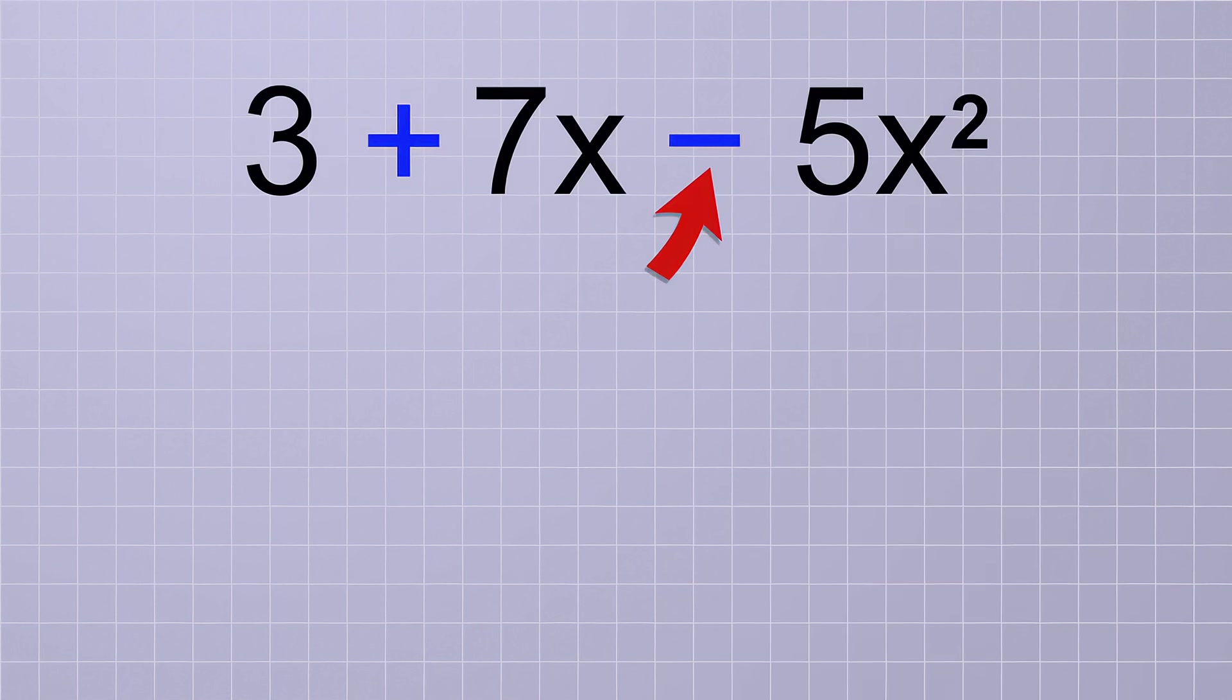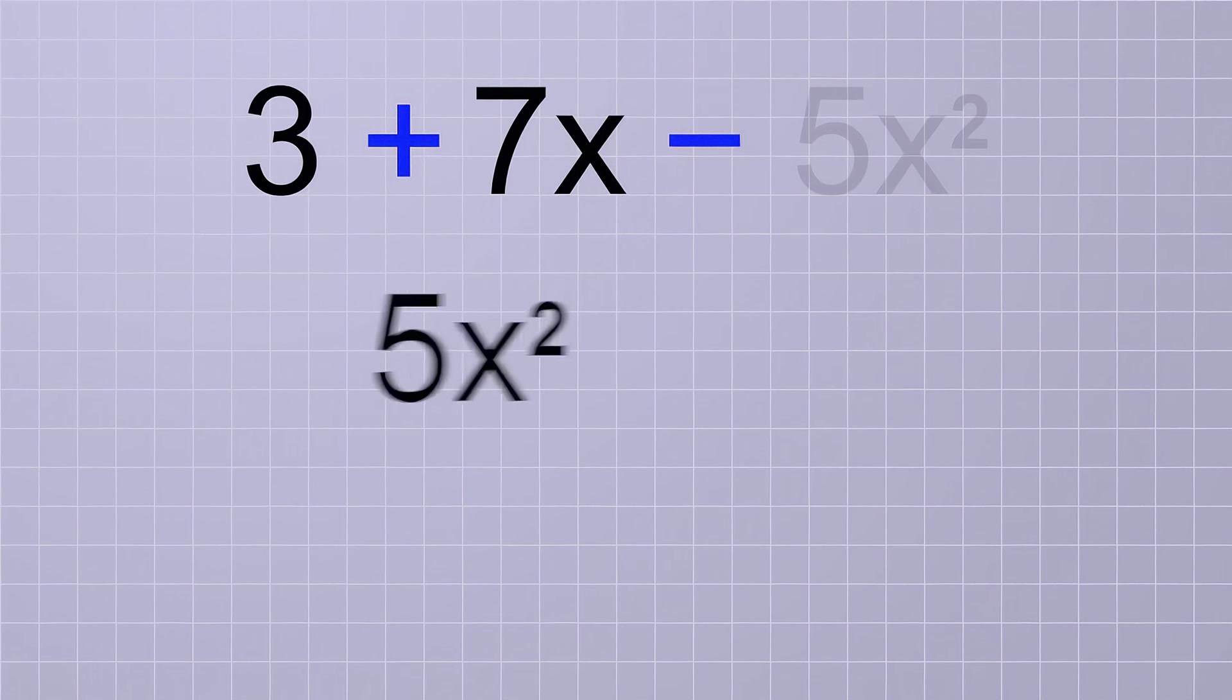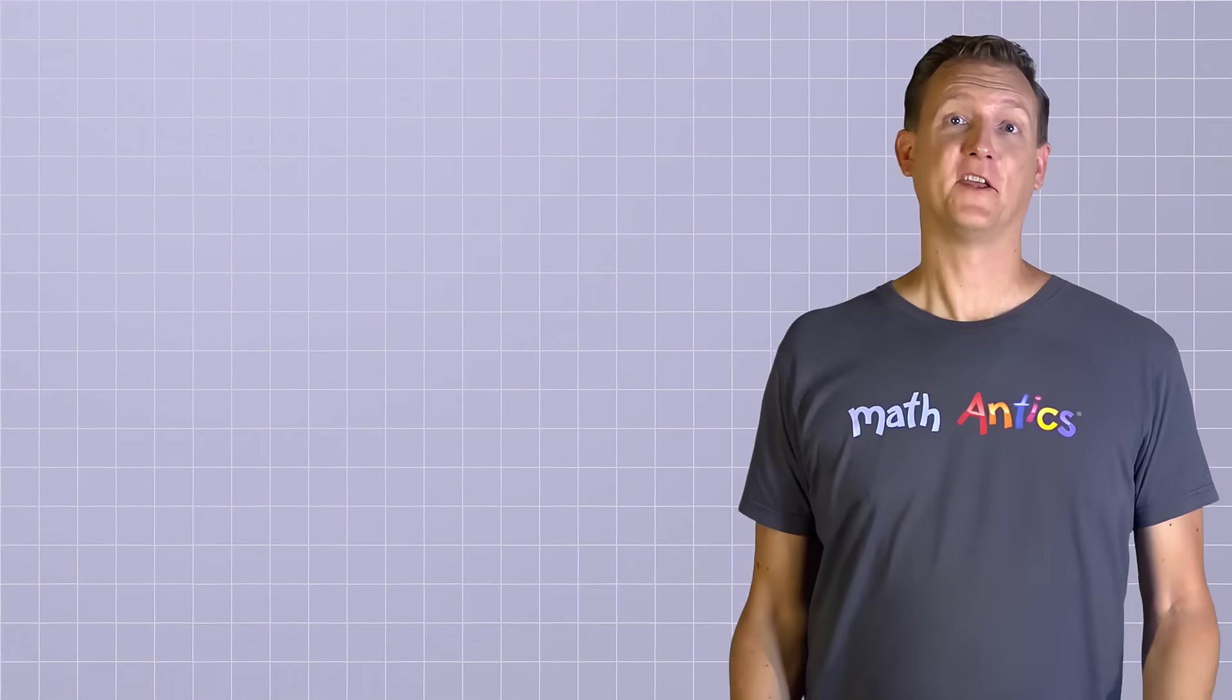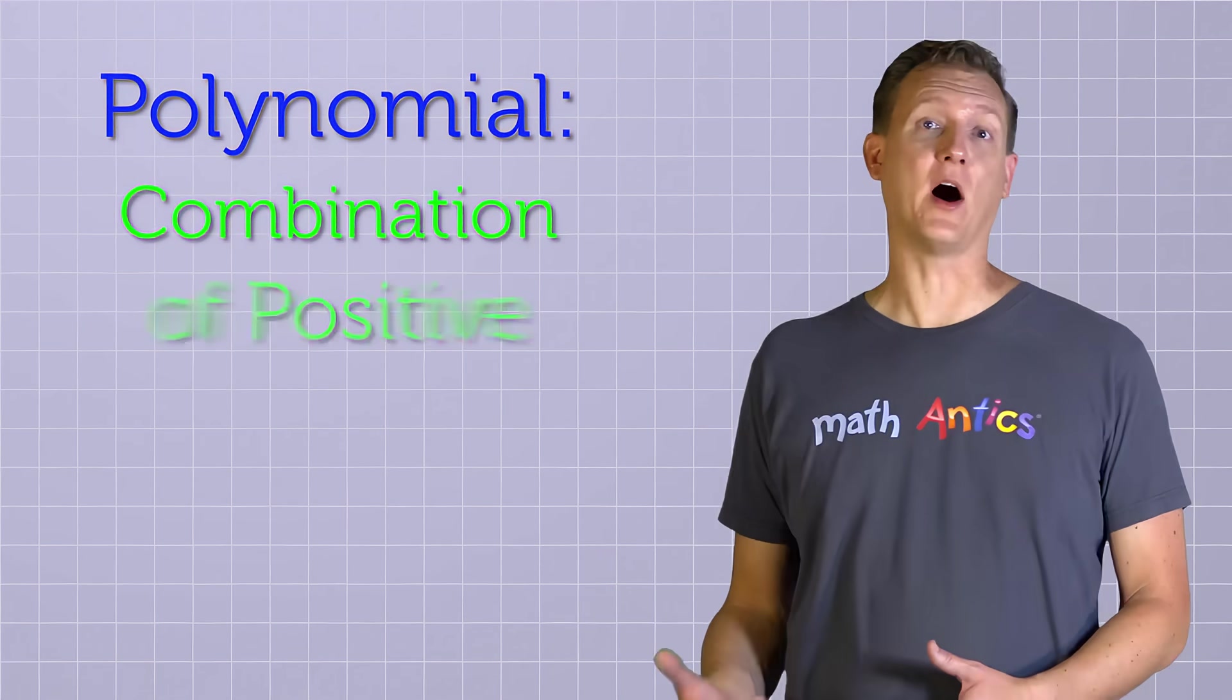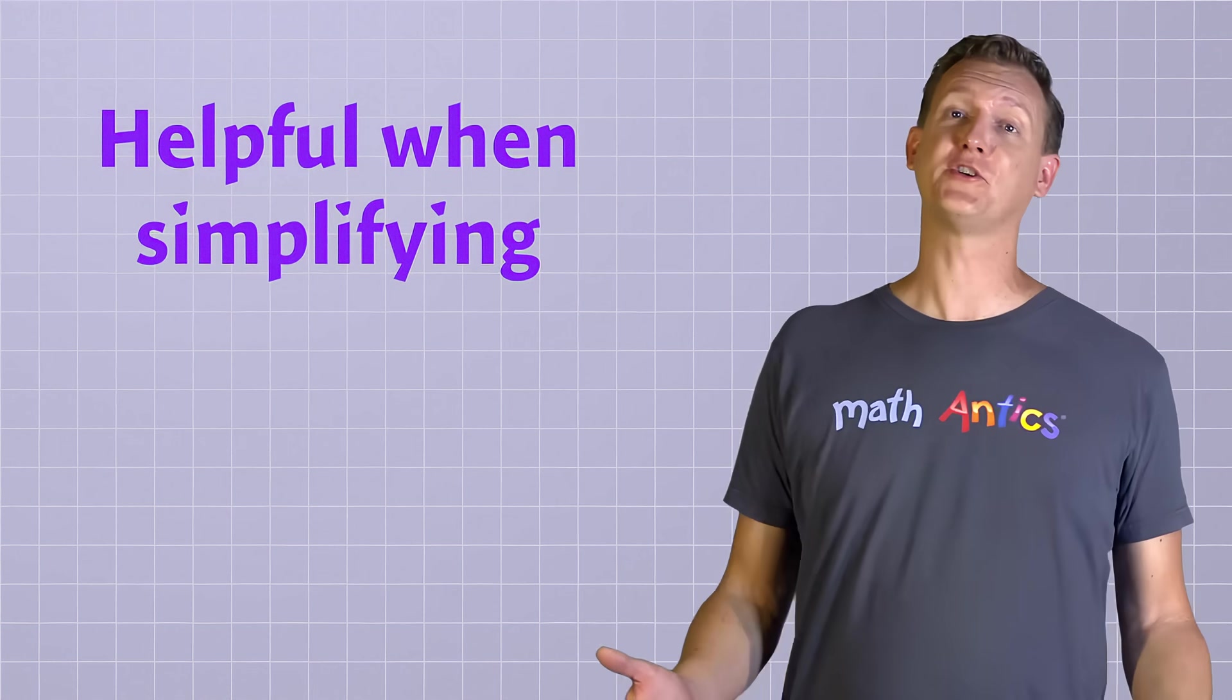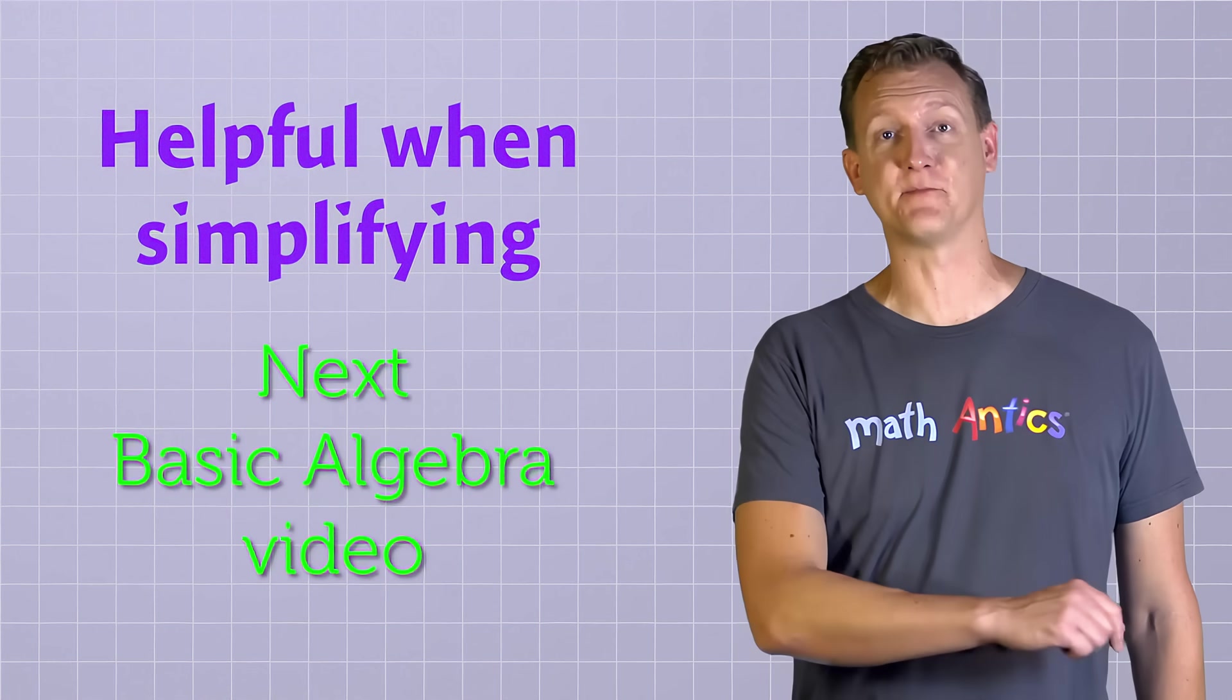If you think of the negative sign in front of the 5x squared term as part of its coefficient, then you'll realize that when we move it to the front of the polynomial, the negative sign has to come with it. It has to come with it because it's really a negative term. If we don't bring the negative sign along with it, we'll be changing it into a positive term, which would actually change the value of the polynomial. And, in addition to helping us rearrange them, treating a polynomial as a combination of positive and negative terms will be very helpful when we need to simplify them, which just so happens to be the subject of our next basic algebra video.